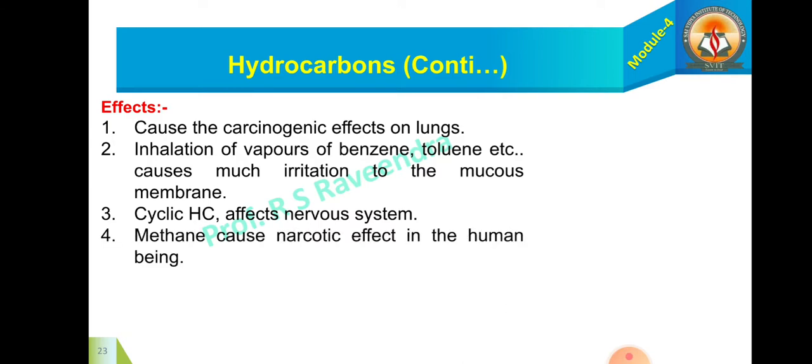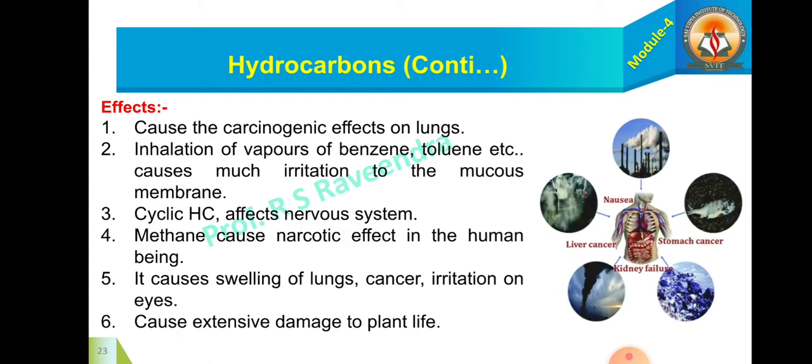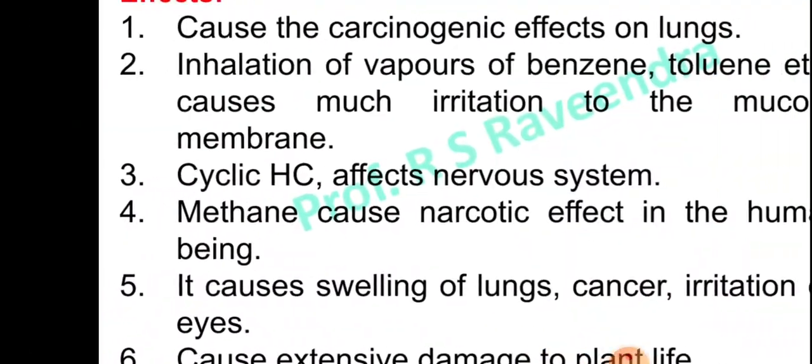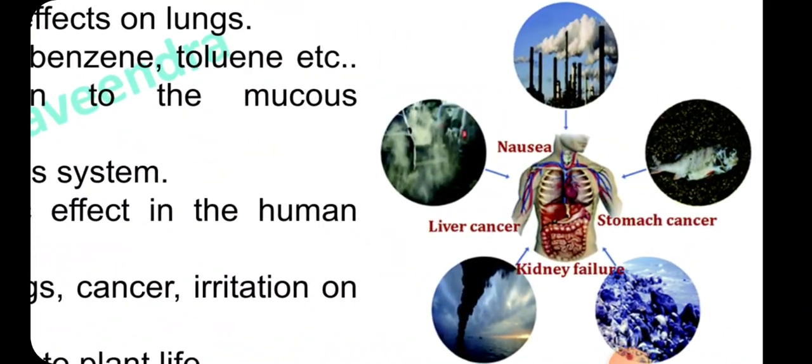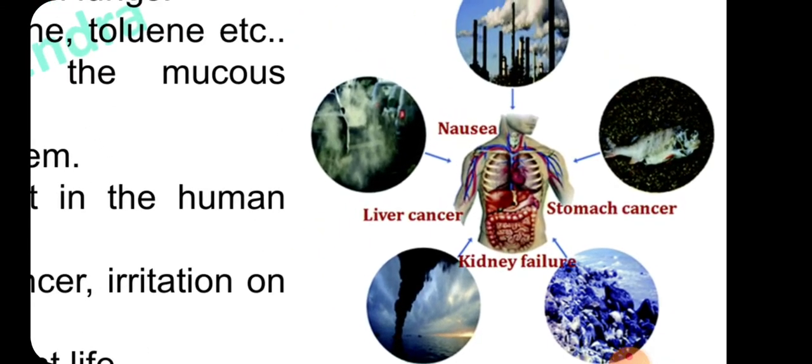Methane causes narcotic effect in the human being, it causes swelling of lungs, cancer, irritation on the eyes, but also cause extensive damage to the plant life. These are the various effects of the hydrocarbons: nausea, liver cancer, stomach cancer, kidney failure, etc.